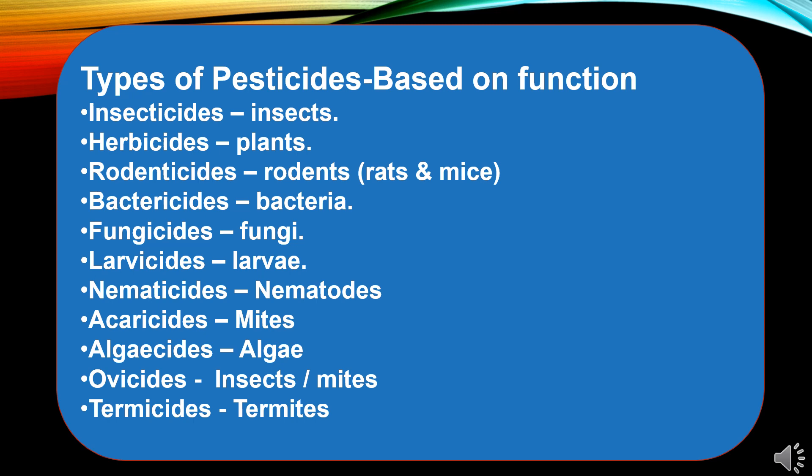Now the classification based on function: insecticides control insects; herbicides are used on plants; rodenticides control rodents like rats and mice; bactericides are used to kill bacteria; fungicides kill fungi; larvicides kill larvae; nematicides function on nematodes; acaricides kill mites; algicides work on algae; ovicides are effective to control the egg development of insects and mites; and termiticides are used for termite control. These are the pesticides classified based on function.